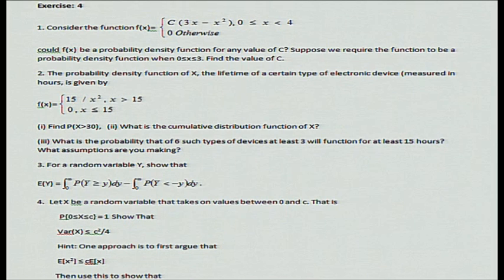The probability of 1 device functioning for more than 15 hours needs to be found, and then you need 3 out of 6. You assume the devices are independent of each other. This becomes a binomial probability, where p is the integral giving the probability of functioning for at least 15 hours. I will leave the rest to you.